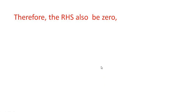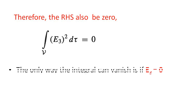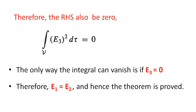Therefore the right-hand side is also zero. So the volume integral of E3 squared d-tau equals zero. The only way this integral can vanish is if E3 equals zero everywhere. E3 equal to zero means E1 minus E2 equal to zero, or E1 equal to E2, and hence the theorem is proved.